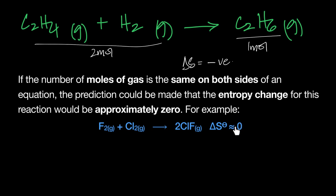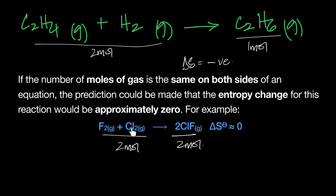If the moles of gas stay the same, the delta S will be a very small value — either very small negative or very small positive. For example, two different moles of gas making two moles of the same gas: two moles on the left and two moles on the right — we can't say much. We'd say entropy change is approximately zero. Each substance has its own entropy value, so using entropy values we'll be able to calculate delta S exactly.